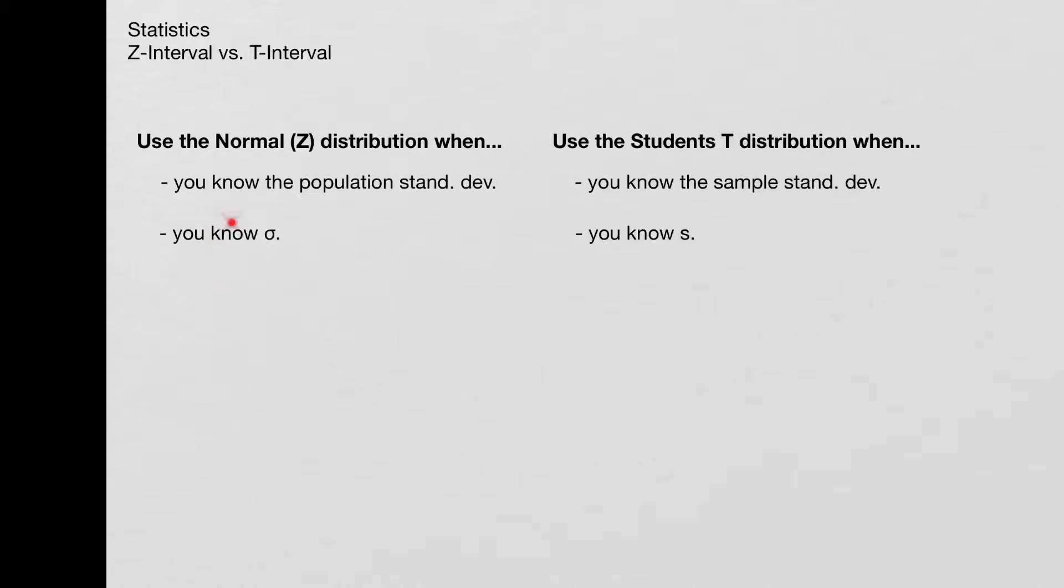Now, another thing, and these are really all equivalent to each other, so these are all just different ways of saying you know sigma or you don't know sigma. So you know sigma, it's going to be the normal distribution. You know the sample standard deviation, it's the student's t-distribution.